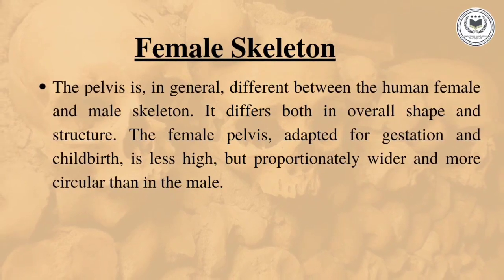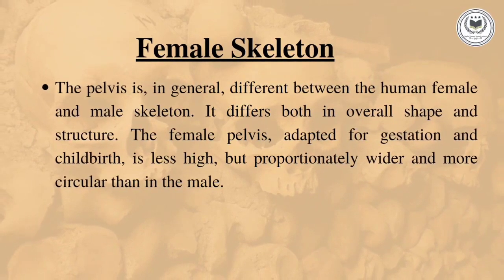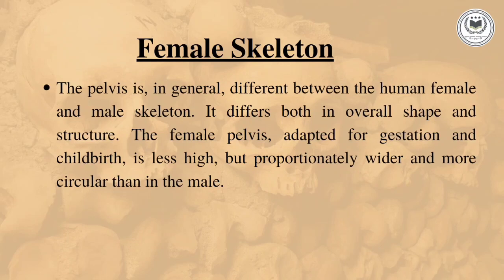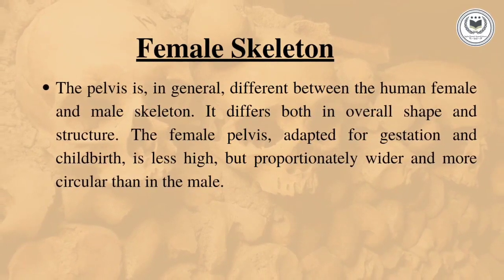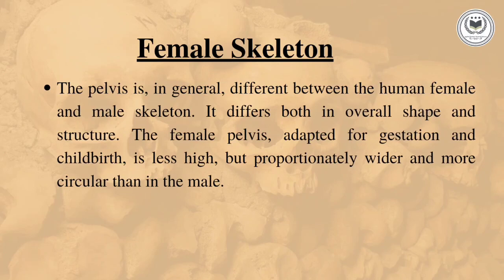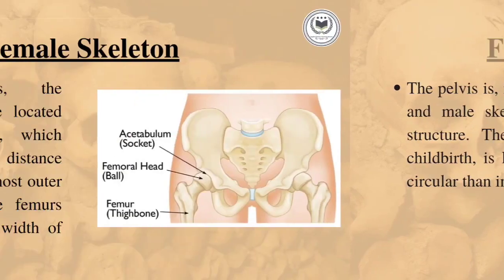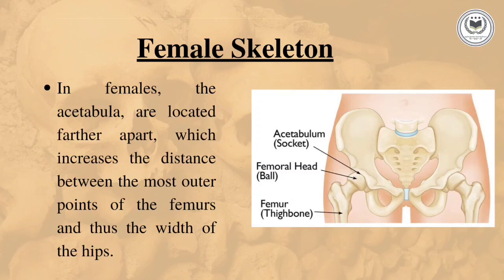The female pelvis is quite broader because it is adapted for gestation and childbirth, whereas in the male skeleton it is quite smaller in size. The acetabula are located further apart in females, which increases the distance between the outer points and ultimately increases the width of the hips.